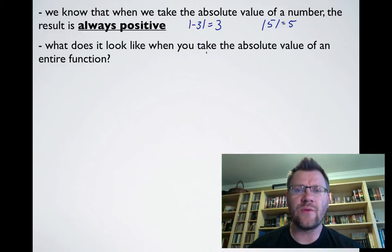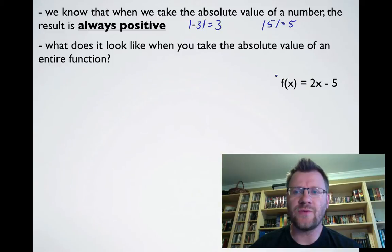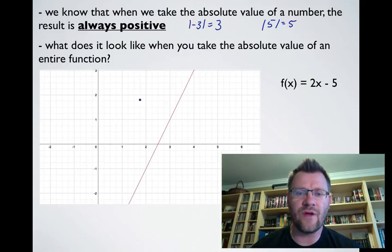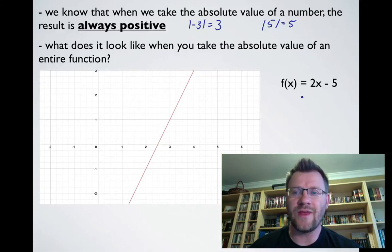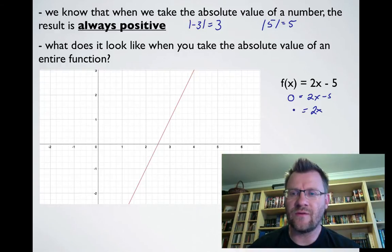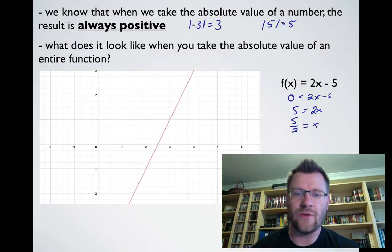So what does it look like when you actually take the absolute value of an entire function? The function we're going to look at is f(x) = 2x - 5. I've graphed it right here. You can see it has an x-intercept of five over two. Remember, to get x-intercepts, we let y equal zero and solve for x. That means 2x = 5, so x = 5/2, which is two and a half — there's our x-intercept.